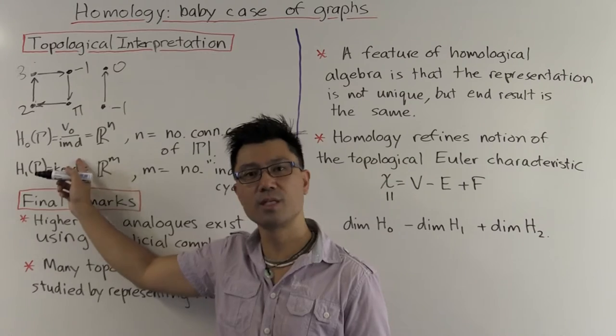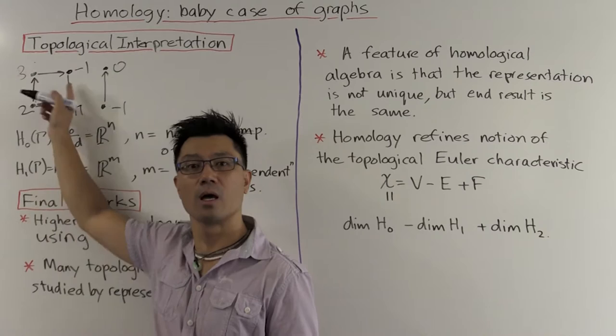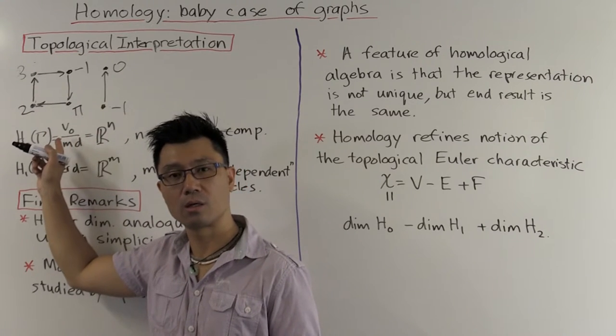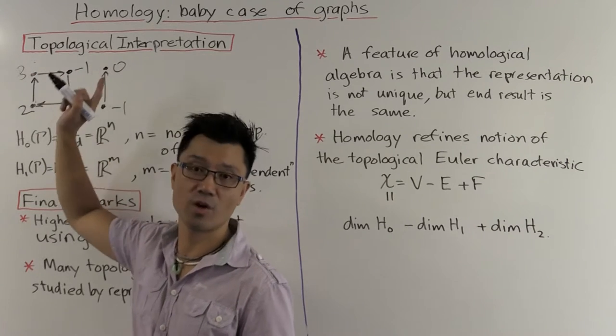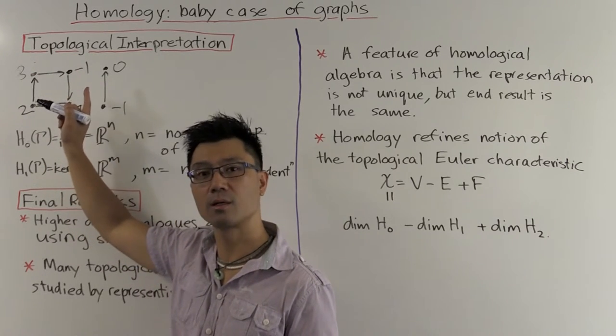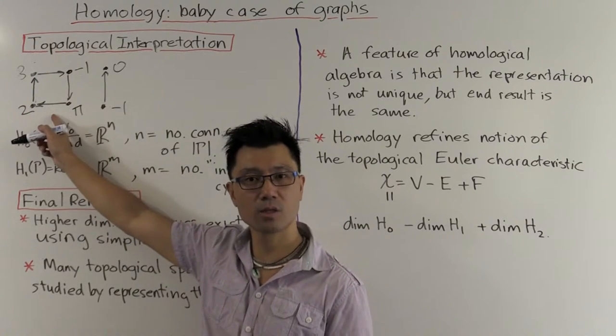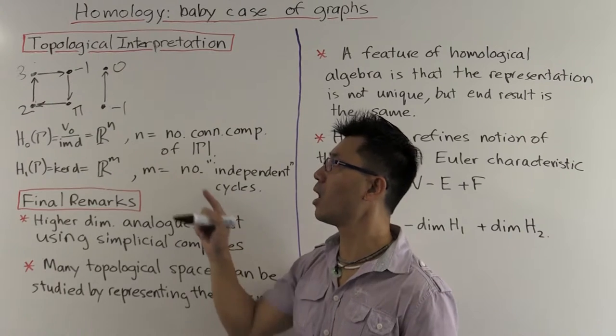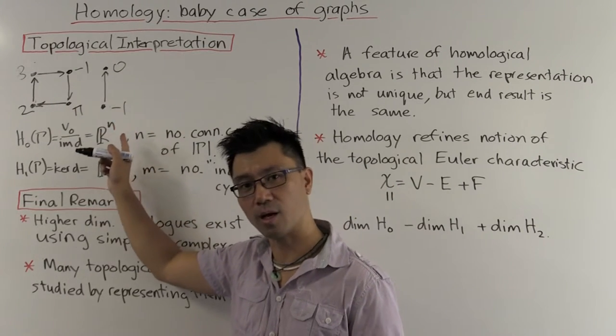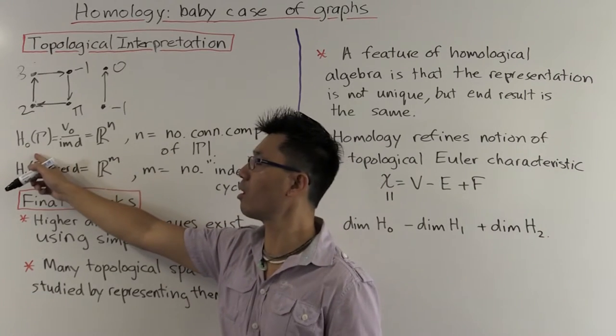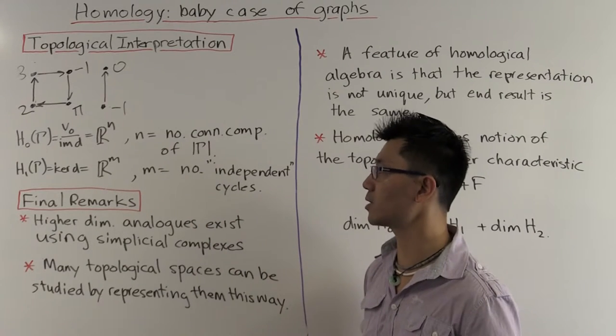Now remember, modulo the image of D, each of the vertices in one connected component, they're all congruent to each other. So we can move these scalars across to one of the vertices, whichever one we like. And this contributes a single R. This one connected component contributes a single R. And similarly, the other connected component contributes a single R. And that's why the zeroth homology is R to the n, where n is the number of connected components.